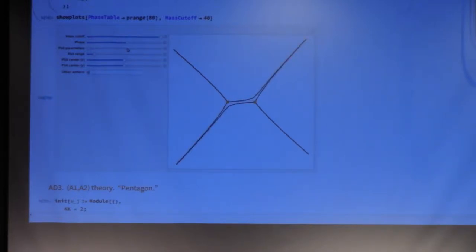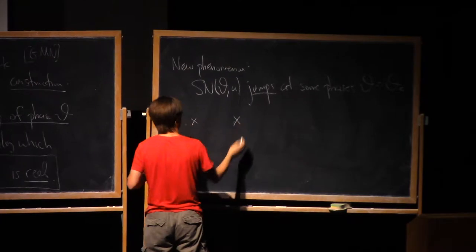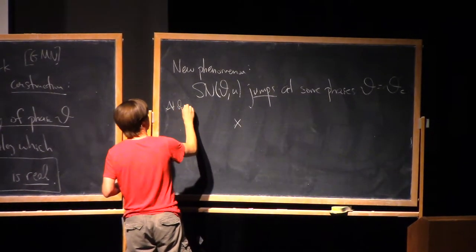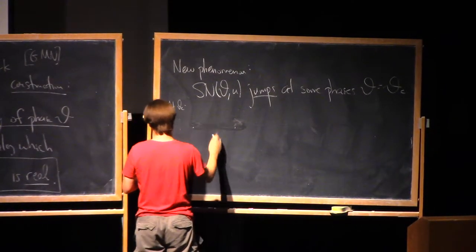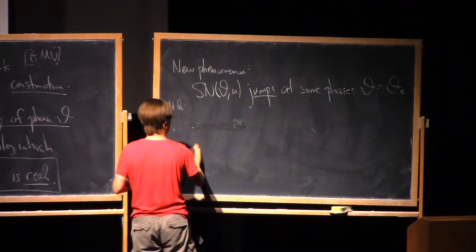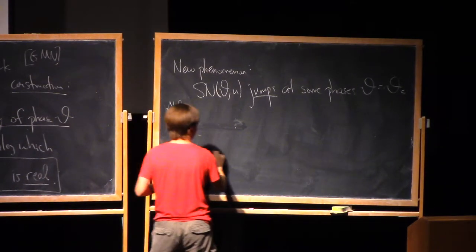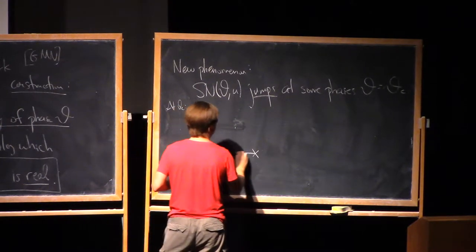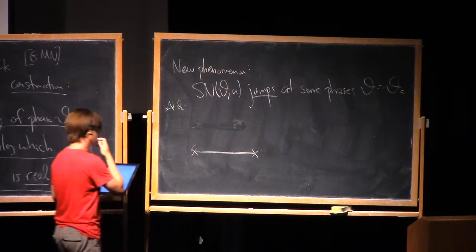And right at the moment when the jump occurs, you can see what's kind of special. What's special is the appearance of this trajectory that directly connects the two branch points. So at theta critical, we have a picture like this. We have a trajectory that goes straight between these two branch points.